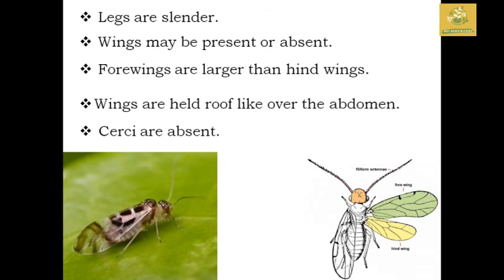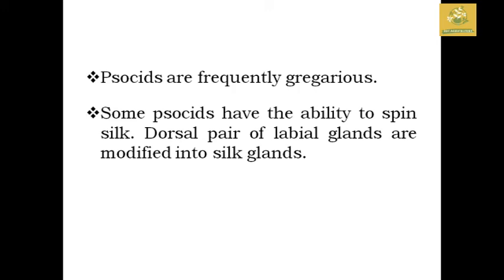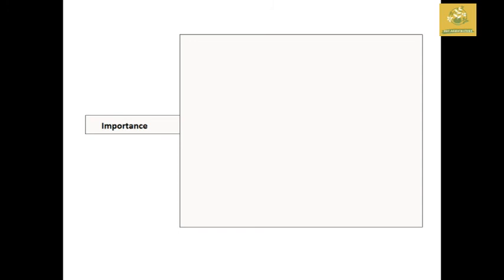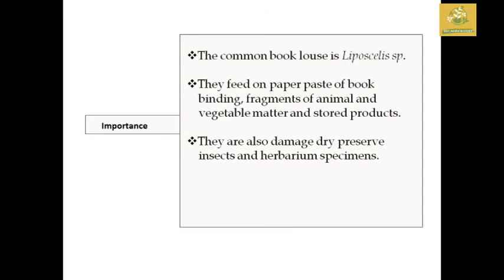The legs are slender and wings may be present or absent. The forewings are larger than the hindwings, and the wings are held roof-like over the abdomen. Cerci are absent. Some Psocoptera frequently undergo gregarious feeding. Some subcortical species have the ability to spin silk around them, and the dorsal pair of labial glands is modified into silk glands. They are commonly found as booklice — a depositary species — feeding on paper paste of book bindings, fragments of vegetable matter, and stored products. They also damage dry preserved insect collections and herbarium specimens.